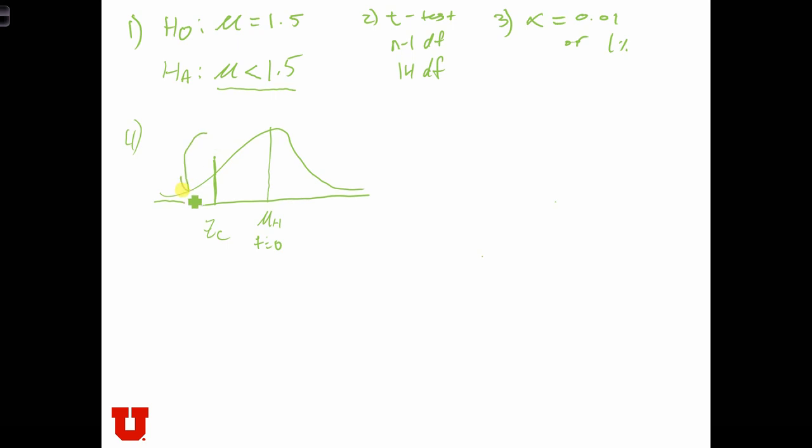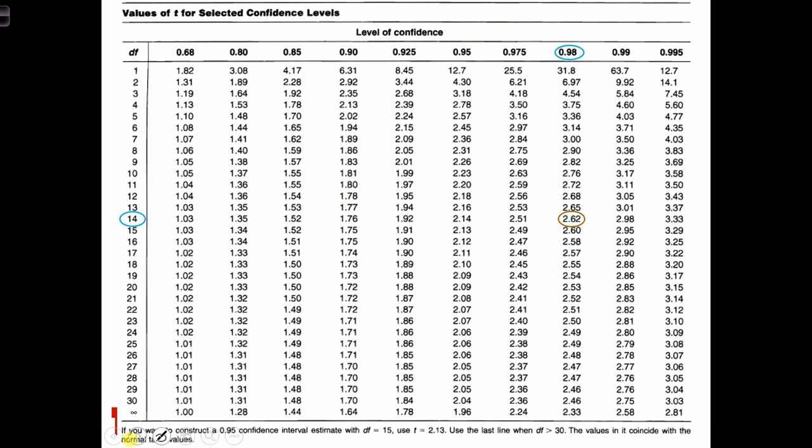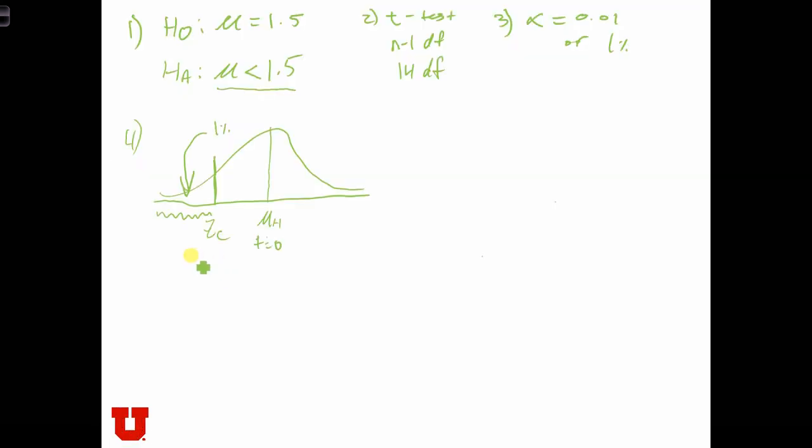And over here, because our significance level is 1%, we are going to put 1% of the area in the rejection zone. So this over here is the rejection zone, and we have 1% of the area there. So based on that, let's use the 98% confidence level, because that's going to put 1% on the left side and 1% on the right side. We're going to use 14 degrees of freedom, so we go down to 14 over here, and we find that the critical value to use is 2.62. Now this table is going to give you the positive critical value. In our case, we are actually going to use the negative of that, so we have negative 2.62. And that's the critical value over here.